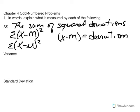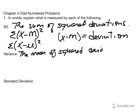Variance represents the mean of squared deviations. For a population, variance is equal to SS over N. Just like we calculate the average of scores by taking the sum of scores divided by how many scores we have, here we have in the numerator the sum of squared deviations, and the denominator represents how many squared deviation scores we're working with.